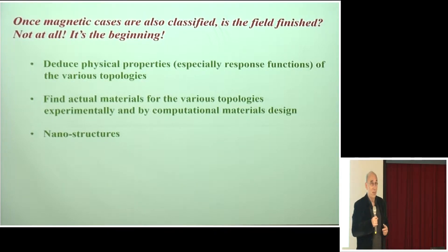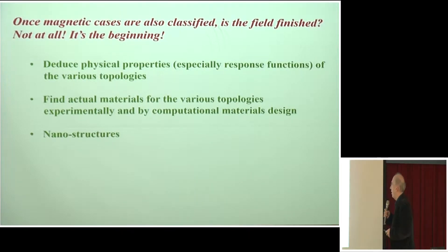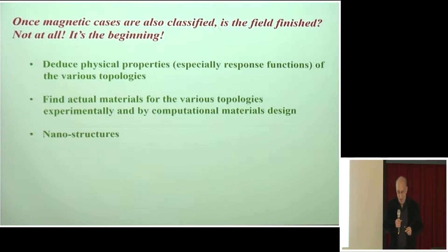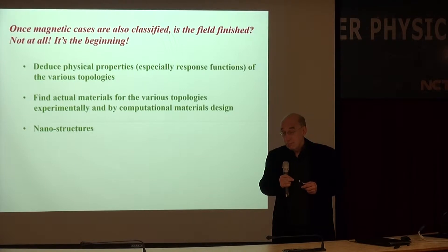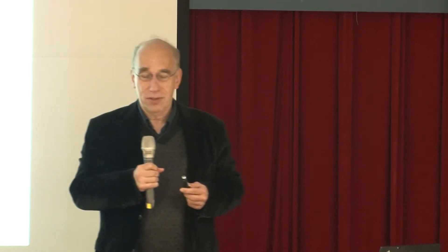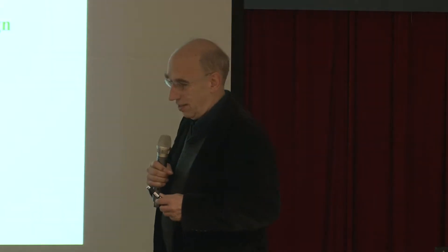Above all, experimentally this is largely based on experimental intuition, but also I think an important role will be played by computational materials design. There have been a number of first steps presented by Christian. We have nowadays structure prediction methods of various kinds. We can search the space of all possible materials, and if we require certain descriptors — the materials not only to be stable but also to have certain properties — we can in this way find particular materials with these properties.